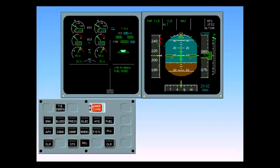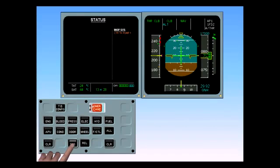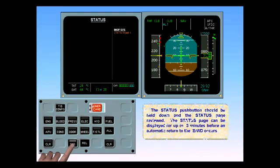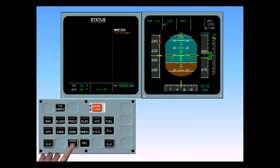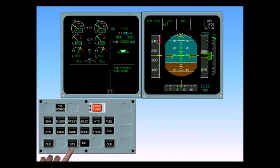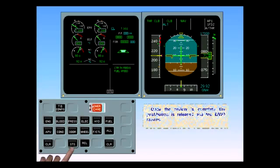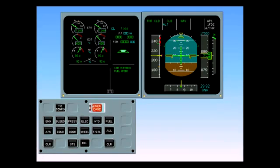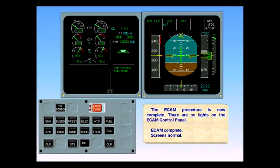The status push button should be held down and the status page reviewed. The status page can be displayed for up to three minutes before an automatic return to the EWD occurs. Once the review is complete, the push button is released and the engine warning display returns. The ECAM procedure is now complete. There are no lights on the ECAM control panel. ECAM complete, screens normal.